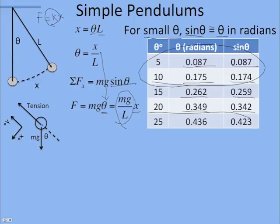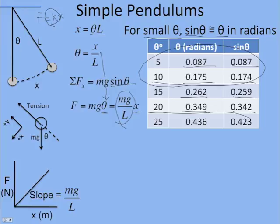So now everything we did for the spring mass, we can use for the pendulum. If I can graph force versus the displacement, the slope, instead of being little k, would be this collection of constants, the mass of the pendulum, little g, and the length.